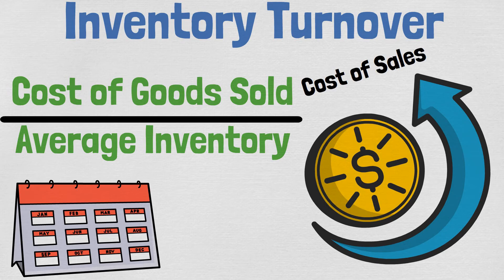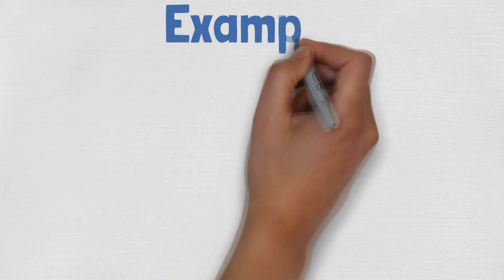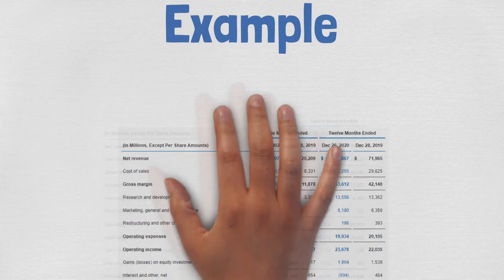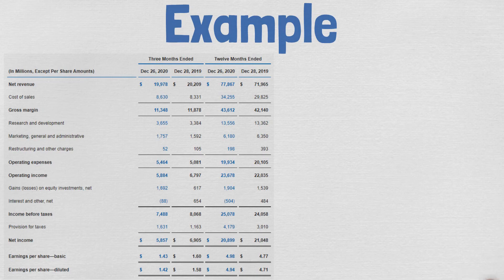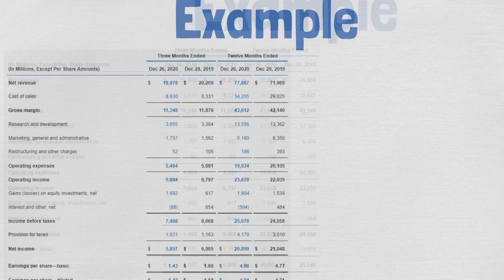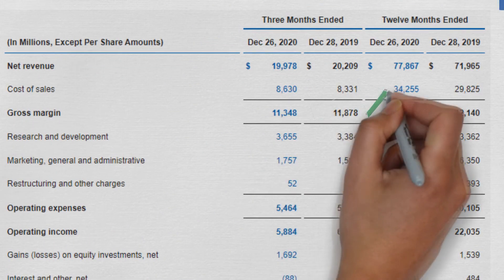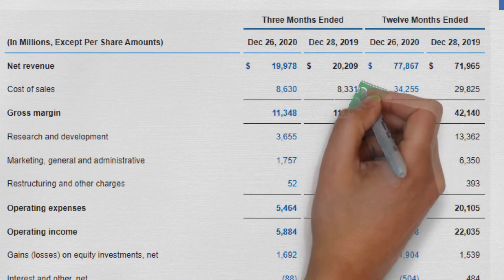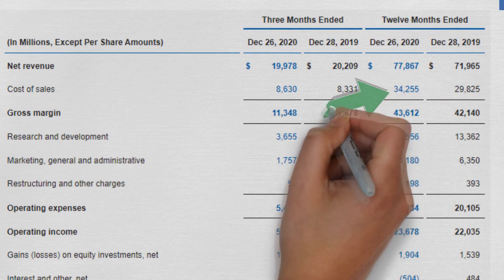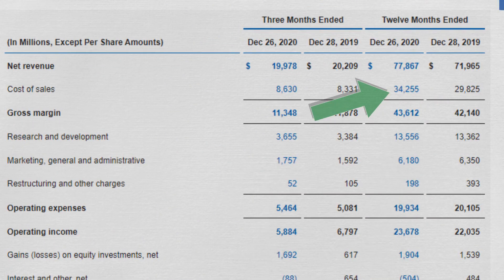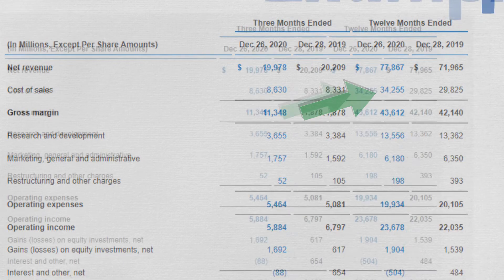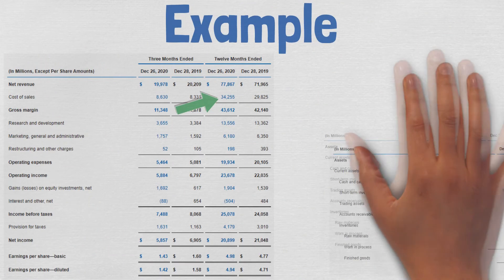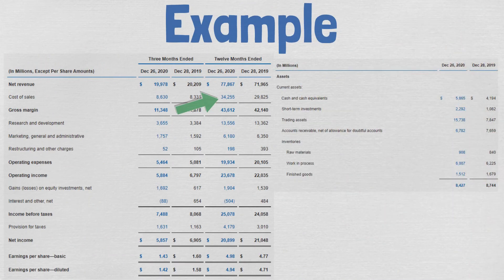Let's calculate Intel's 2020 inventory turnover ratio as an example. You can find the cost of goods sold from the company's income statement. For Intel, the cost of sales for 2020 was $34.255 billion. The inventory can be found on the balance sheet.